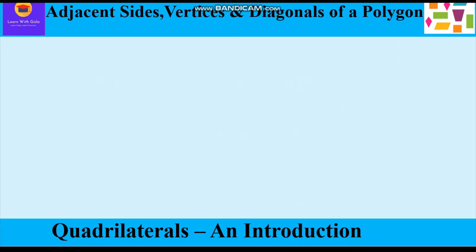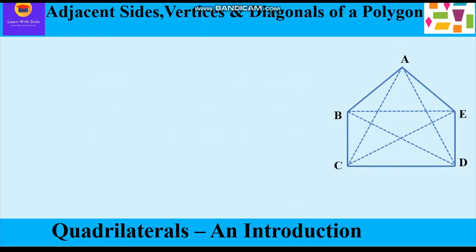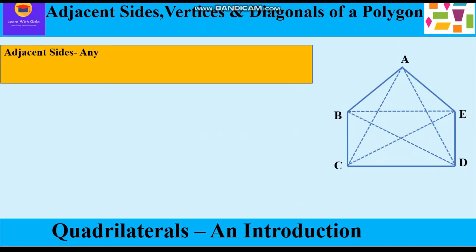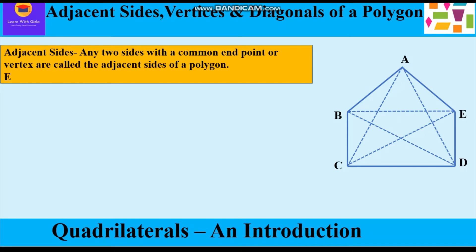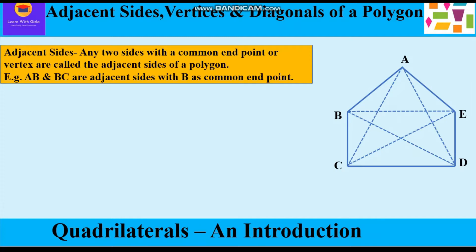Now we shall study about adjacent sides, adjacent vertices, and diagonals of a polygon. Any two sides with a common end point or vertex are called the adjacent sides of a polygon. For example, AB and BC are adjacent sides with B as a common end point. Similarly, BC and CD are adjacent sides with C as a common end point.